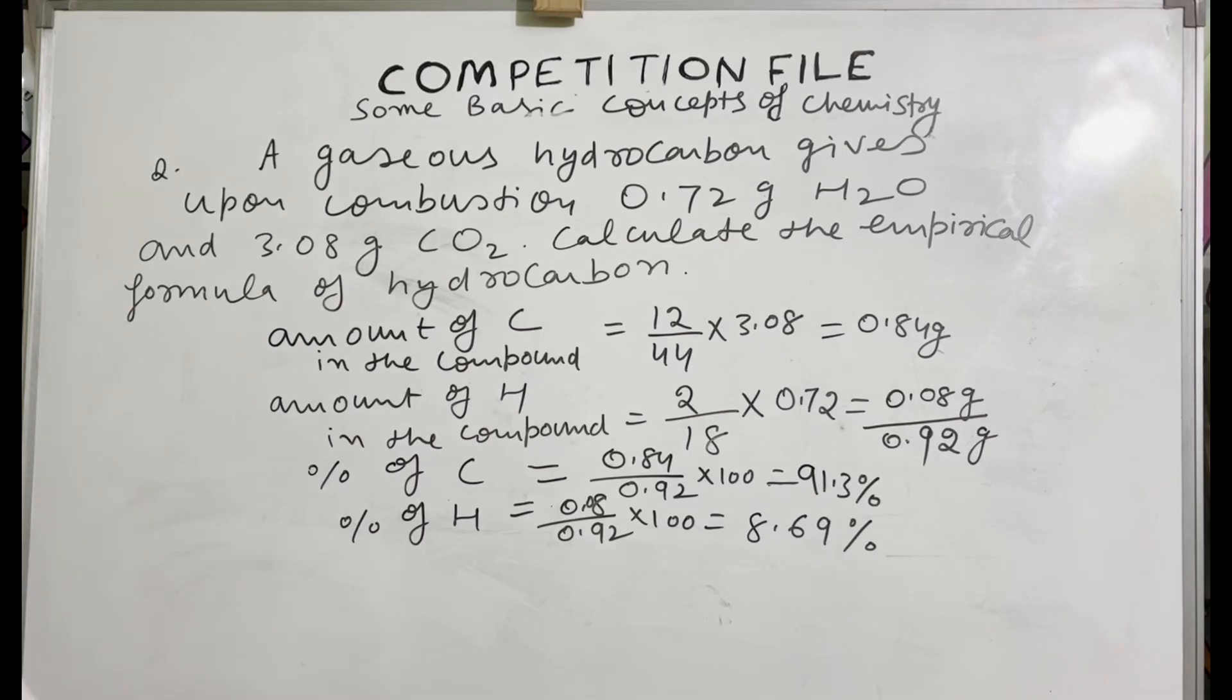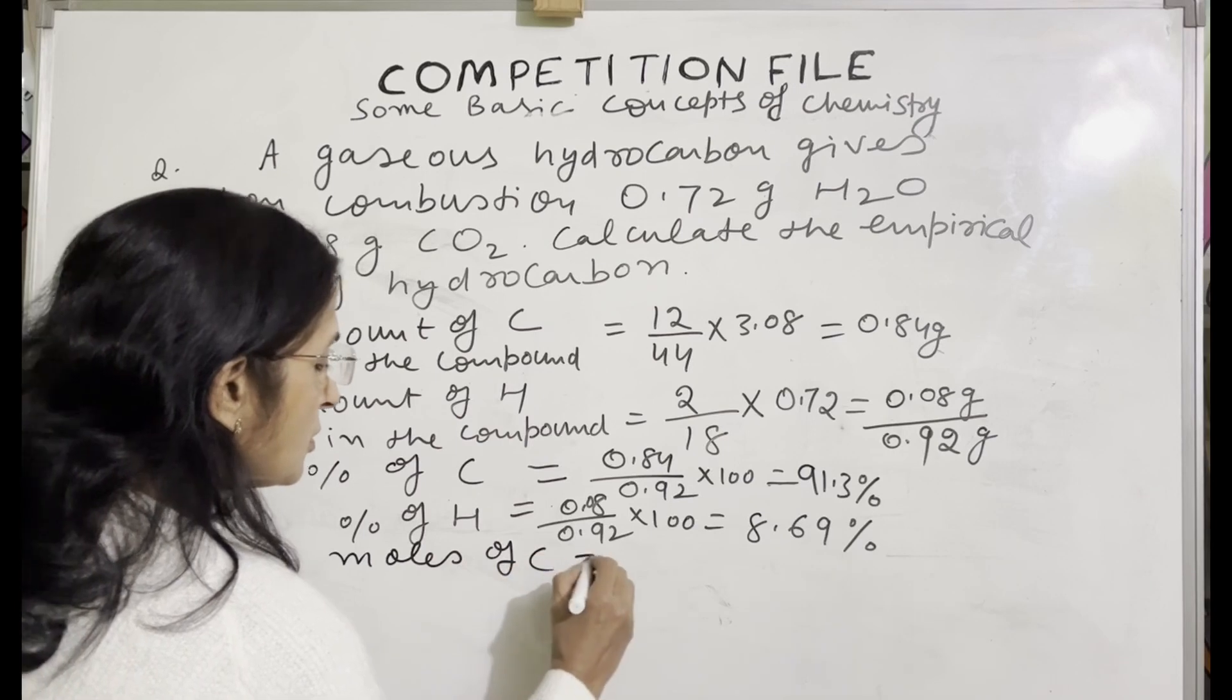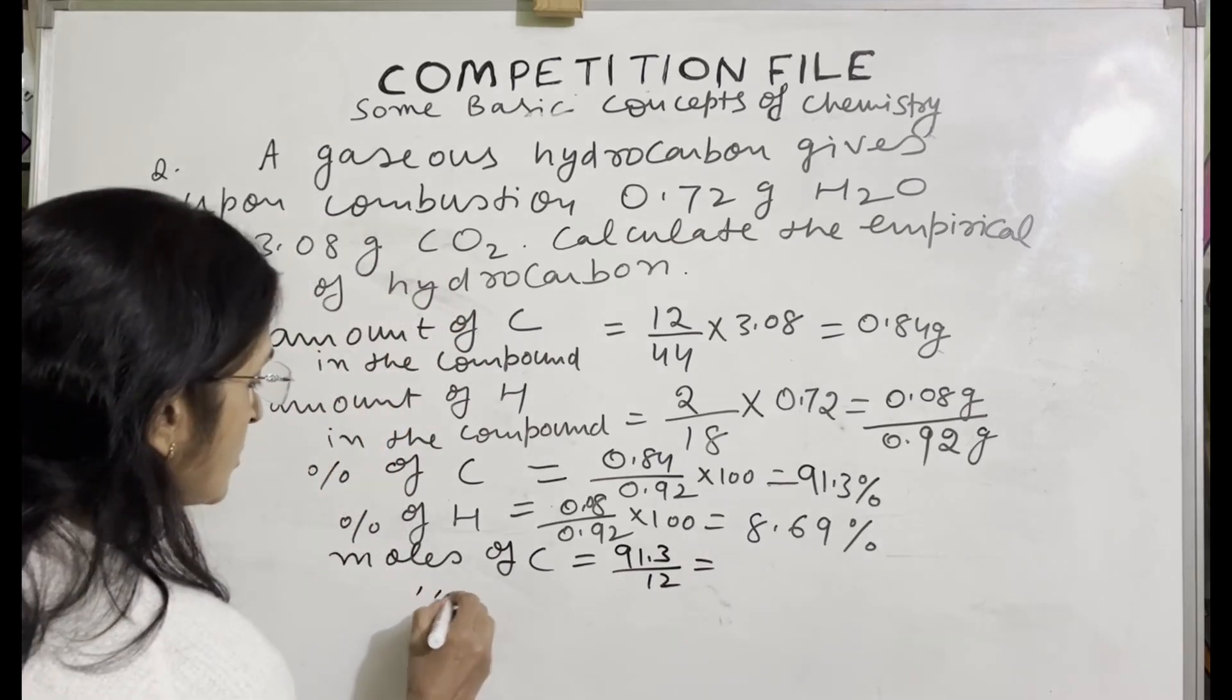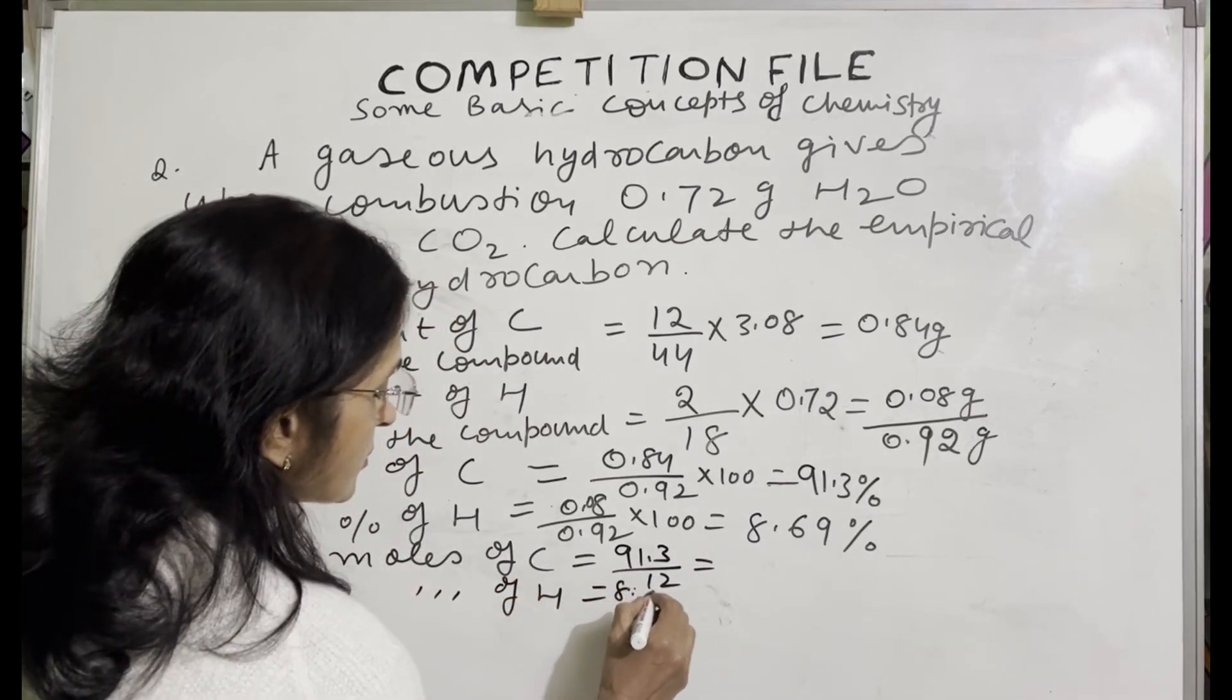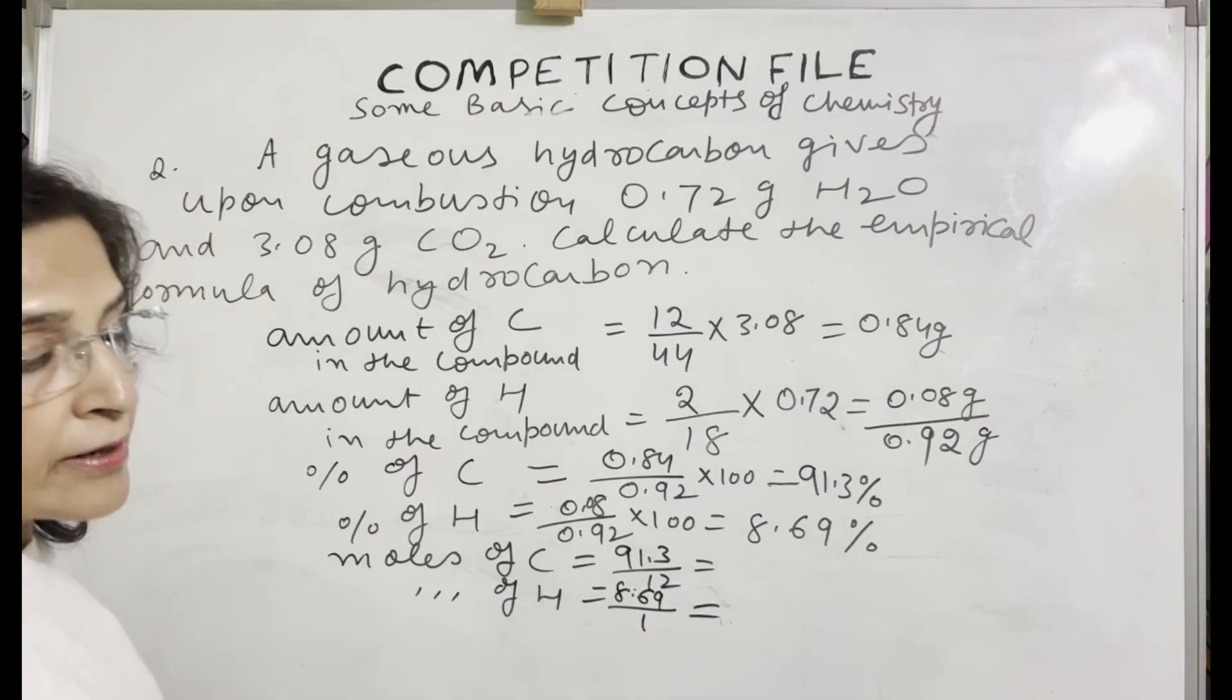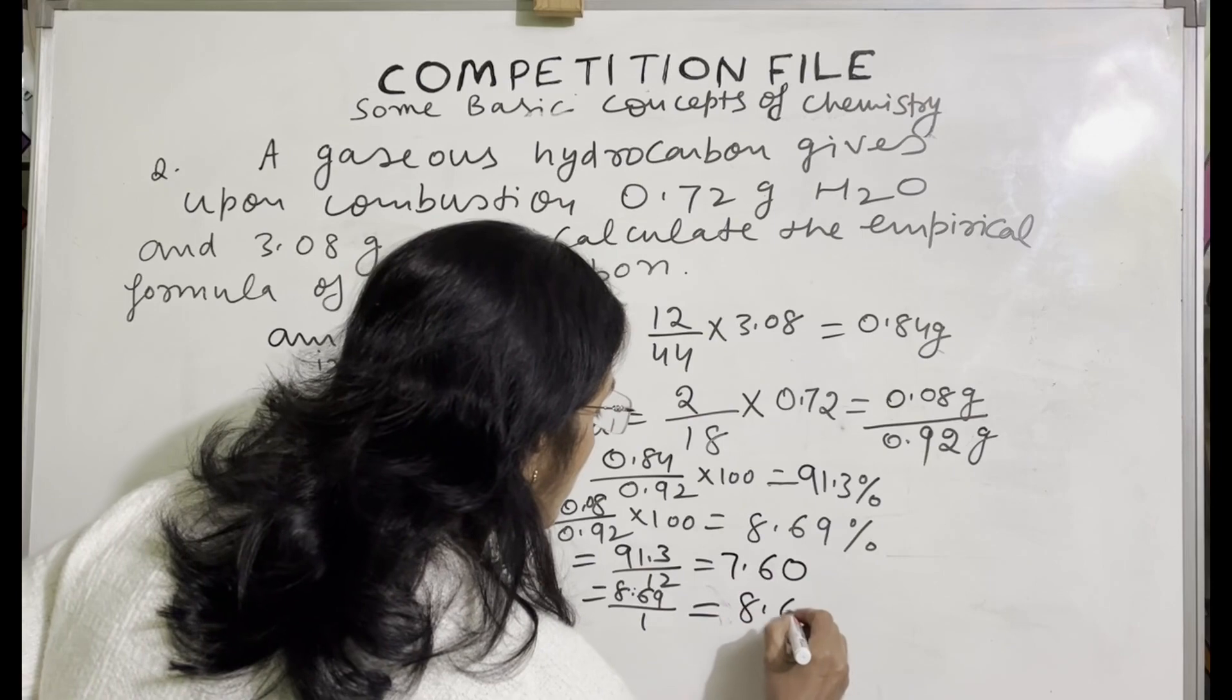Now you will find moles of carbon and moles of hydrogen. Moles of carbon is equal to 91.3 divided by 12. And moles of hydrogen is 8.69 divided by 1. After dividing, the value comes 7.60 for carbon and this will be 8.69 for hydrogen.